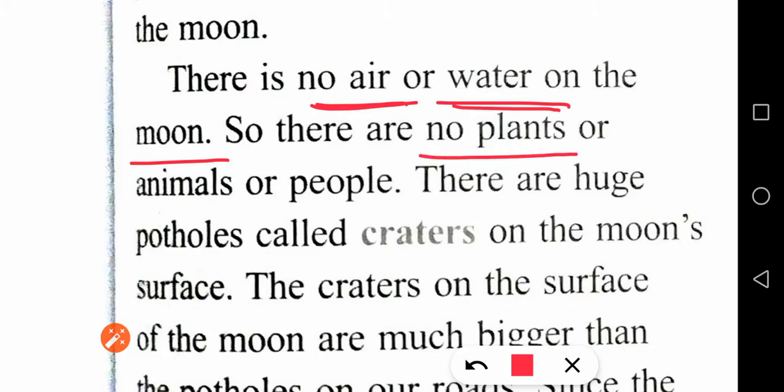There are no plants on the moon. If there are no plants, then there is no air. And why no plants? Because there is no water. And since there is no air and no plants, animals and people cannot survive there either.